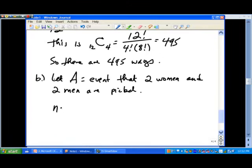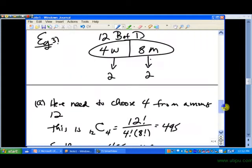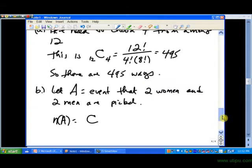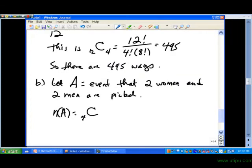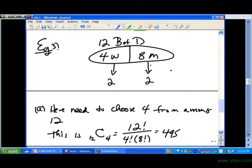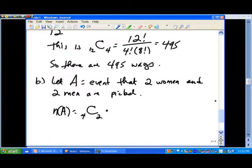So it looks like the cardinality for that event would be given by the combination, well, what do we have here? We want to choose two among the four women. So that's going to be the combination four choose two. And then we're using the multiplication principle here. And then among the eight men, we're choosing two of those. So that would be the combination eight choose two.